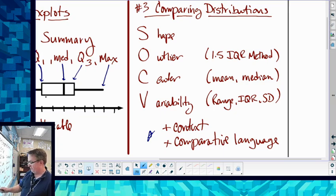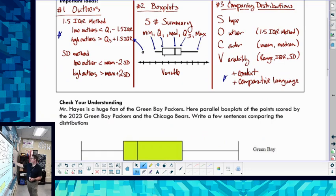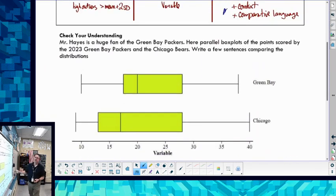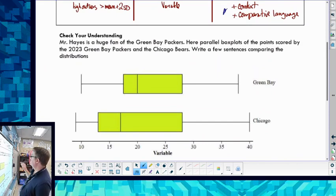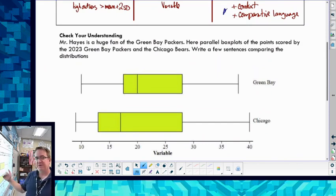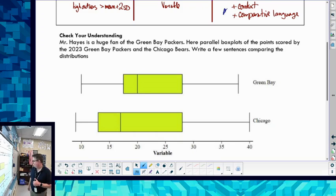Now down below as usual we have a problem. I'm showing you the two box plots of the points scored between the Green Bay Packers last season and the Chicago Bears. So you are to pause here, write a few sentences comparing the two, and then you can come back and compare them to what I'm doing.